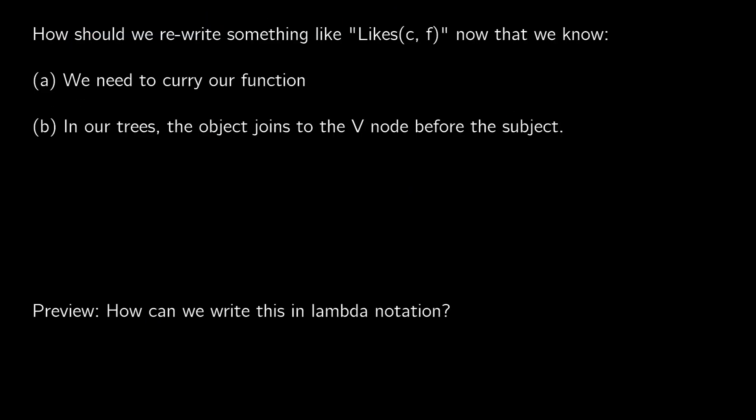That's next video. What I want you to think about is something like 'Carrie likes Fred,' or likes(c,f). This is a pair of two things. We want to rewrite this translation where our function is curried — so we don't just have a pair — and when we look at our trees, we know the object comes first. What this is going to look like is our predicate likes, with the object first and the subject after. So we can now translate this as likes(f)(c) — first getting our object, then getting our subject.